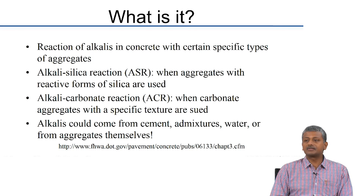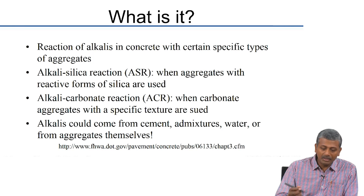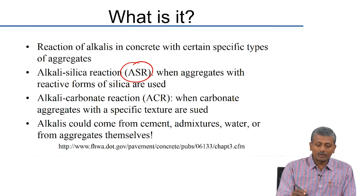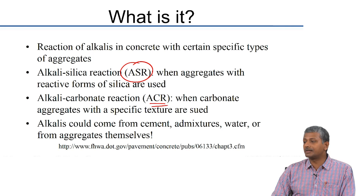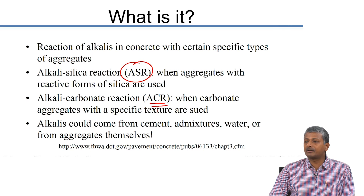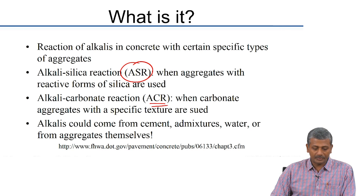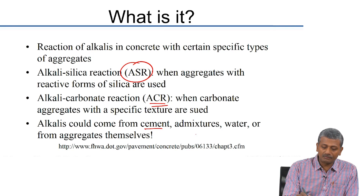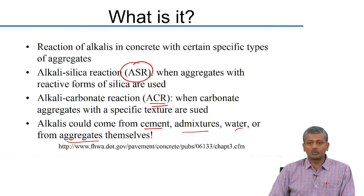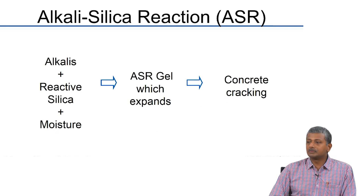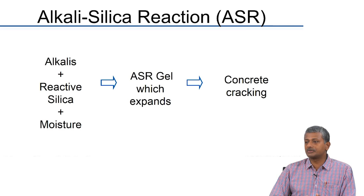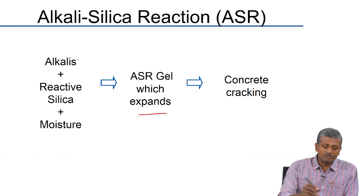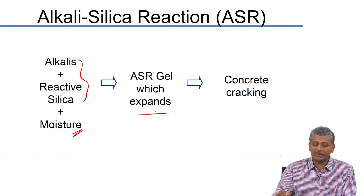So what is alkali silica reaction? It is just the reaction of alkalis in concrete with certain specific types of aggregate. Primarily we deal with ASR where reactive forms of silica are present. You can also get alkali carbonate reaction when carbonate aggregates, especially dolomitic aggregates with a lot of clayey matter, are used. The sources of alkalis are either from the cement, from the admixtures used, or sometimes the water or the aggregates themselves. The reaction requires alkalis plus reactive silica along with moisture — moisture is very essential because without it the gel that forms cannot expand. The alkali silica reaction gel needs moisture to expand, and this expansion leads to concrete cracking.